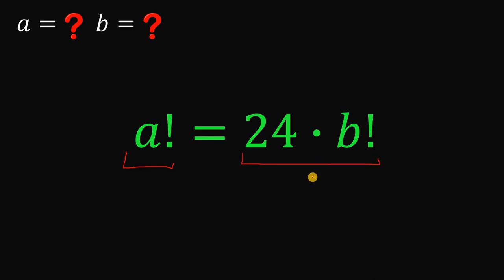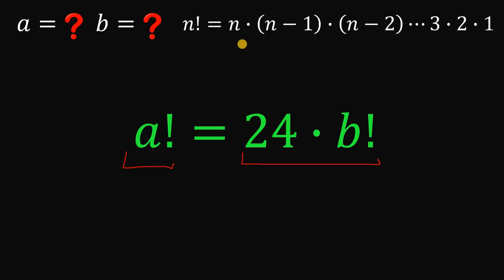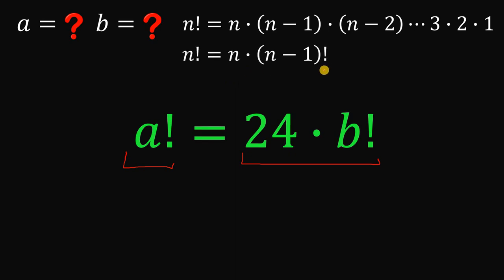Now let's recall what is the definition of a factorial. We know that n factorial equals n times (n−1) times (n−2) all the way down to 3 times 2 times 1 — the product of all natural numbers less than or equal to n. Another definition is that n factorial equals n multiplied by (n−1) factorial, because (n−1) times (n−2) down to 1 is simply (n−1) factorial.